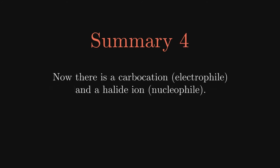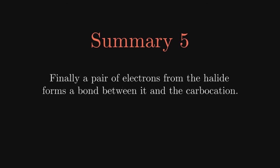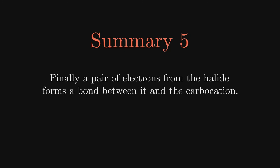The result is a carbocation, an electrophile, and a halide ion, a nucleophile. Finally, a pair of electrons from the nucleophile is used to form a bond between it and the carbocation. The result is a halo alkane.